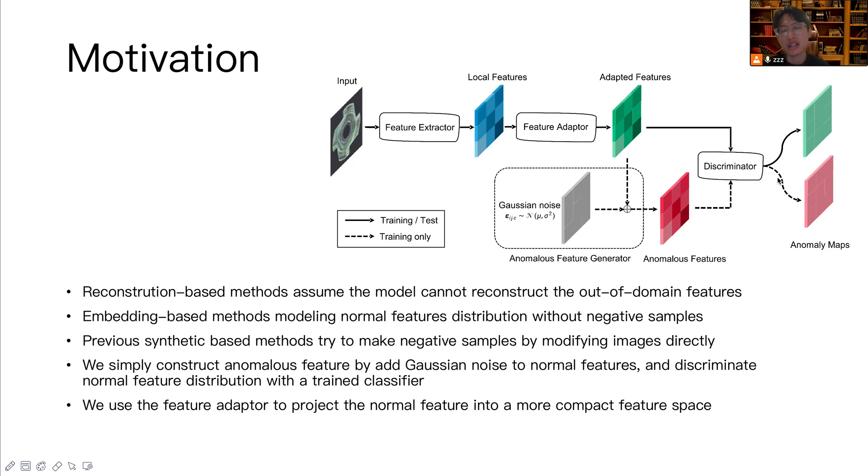So let's talk about several streams of methods previously. The reconstruction-based model assumes that the reconstruction network cannot model out-of-domain features by training the normal samples only. But this might not work well when the anomalous patterns have low color variations compared to the normal ones, because they primarily measure the anomaly score in the image space, like RGB color space.